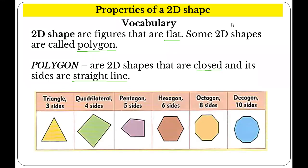These are the examples of polygons. I think you know these already. A triangle has 3 sides and 3 corners. Quadrilaterals have 4 sides and 4 corners. Pentagon has 5 sides and 5 corners. Hexagon has 6 sides and 6 corners. Octagon has 8 sides and 8 corners. And decagon has 10 sides and 10 corners.